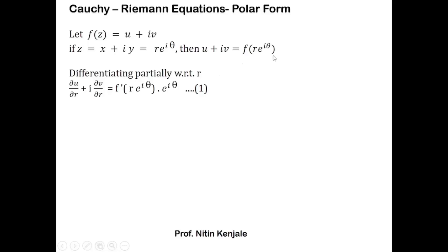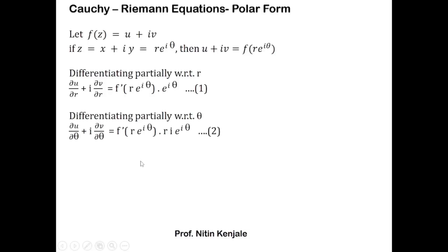Now we differentiate this equation with respect to θ, keeping r constant. The left-hand side gives ∂u/∂θ + i·∂v/∂θ. The right-hand side gives f'(re^(iθ)) times the derivative of re^(iθ) with respect to θ, which is r·e^(iθ)·i. We label this as equation number two.